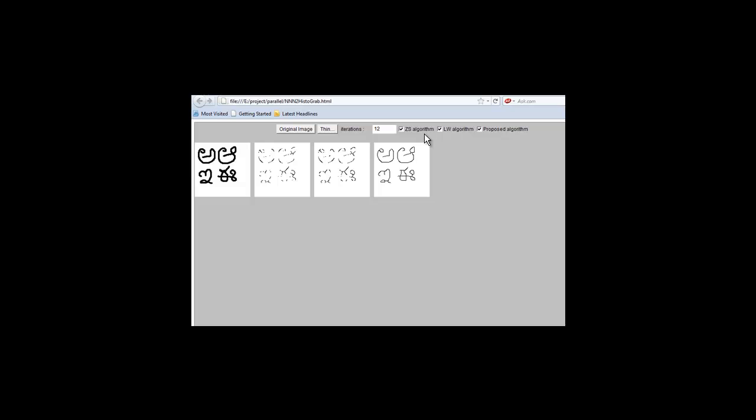In our project, we compare the ZS algorithm, LW algorithm, and the proposed algorithm. The number of iterations the code should be repeated is chosen here. The input is given. When thinning is applied, the input is thinned based on the ZS algorithm, LW, and the rule-based algorithm.